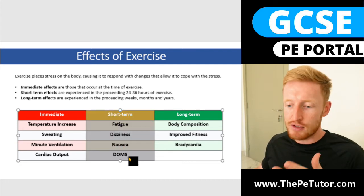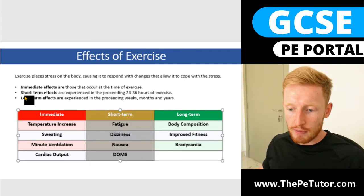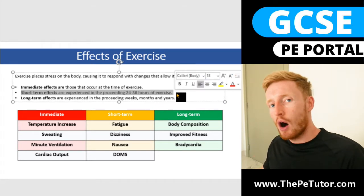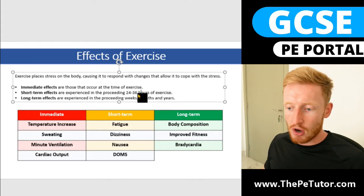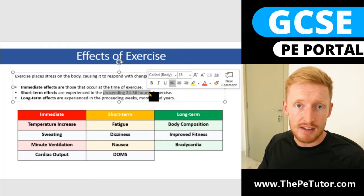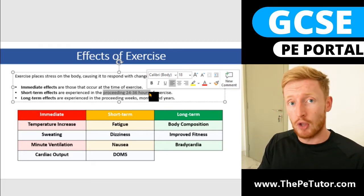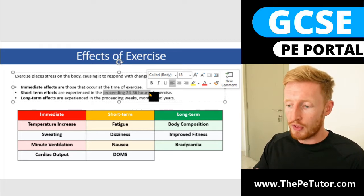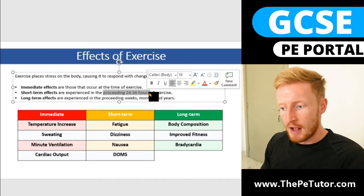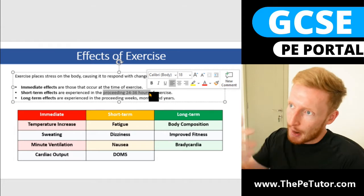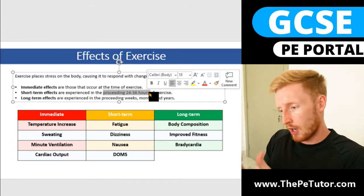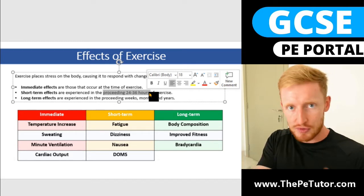For this question we're looking at these four here. The short-term effects are experienced in the preceding 24 to 36 hours after the completion of an exercise session. That window of time is very dependent on the intensity of the exercise completed. The higher the intensity, the more stress placed on the body, therefore the damage, breakdown and response are going to be equivalent to the degree of stress involved in the training.